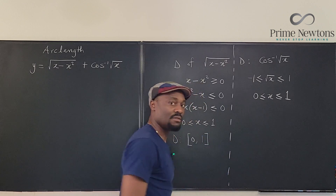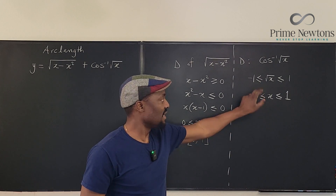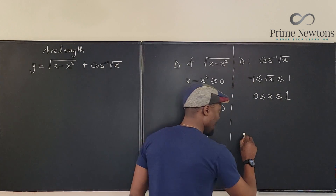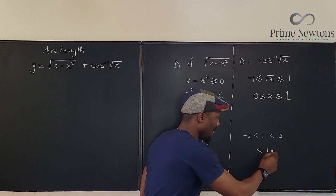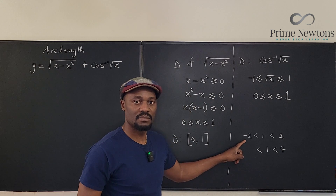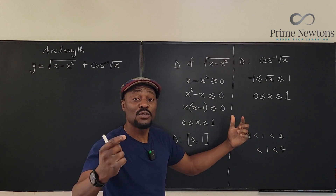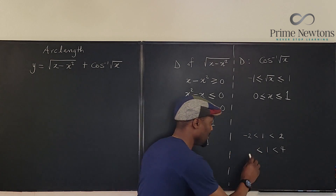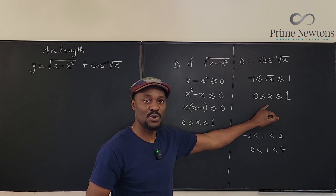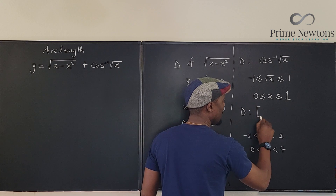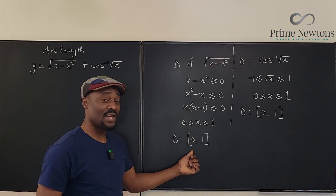Notice that the square root of x cannot be negative, so the left bound becomes 0, because the square of any negative value flips and becomes positive. When you square everything in the inequality, the middle becomes x, 1² is 1, and the left side becomes 0. So the domain of this function is also from 0 to 1. The transformation always works this way for this type of inequality.